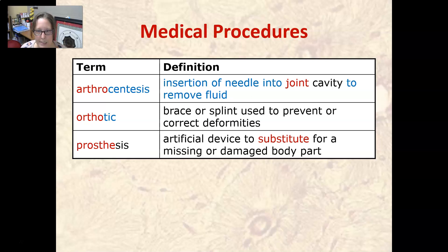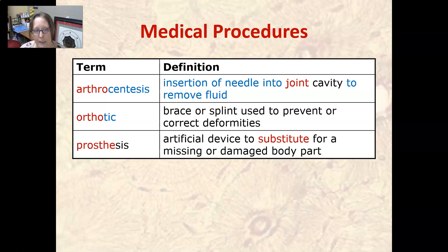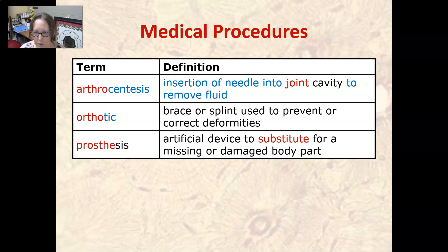Arthrocentesis is the insertion of a needle into a joint cavity to remove fluid — 'centesis' means needle puncture and removal of fluid, and 'arthro' means joint. An orthotic is a brace or splint used to prevent or correct deformities. A prosthesis is an artificial device to substitute for a missing or damaged body part.